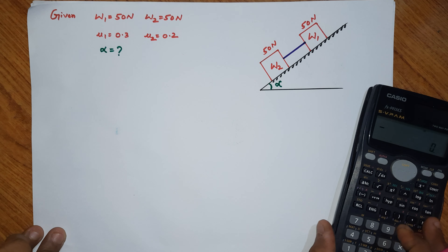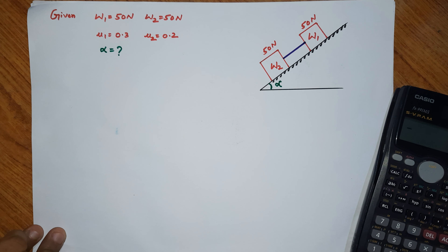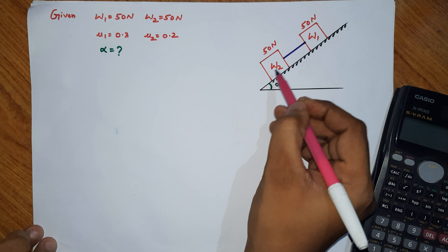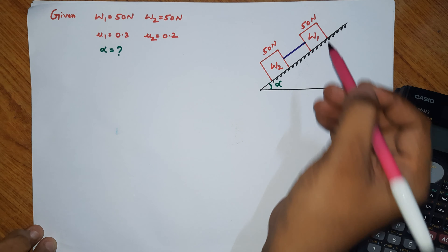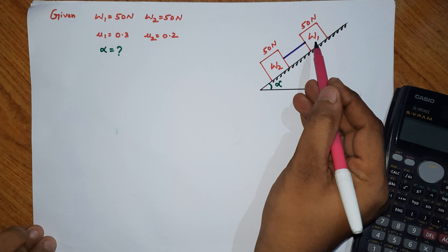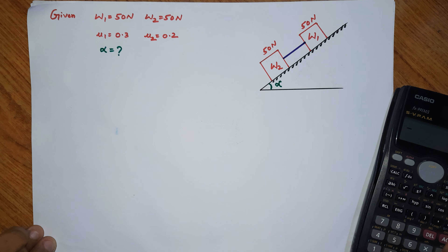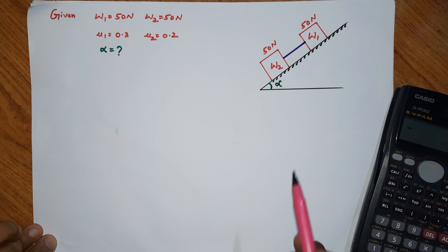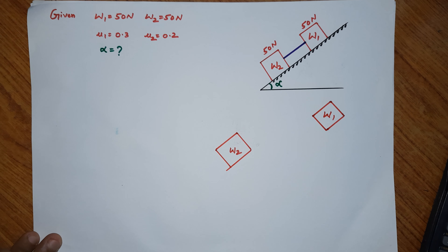To start this problem, the first important step is to draw a free body diagram for both blocks. The purpose of the free body diagram is to identify all the forces acting on the blocks and clearly represent them.